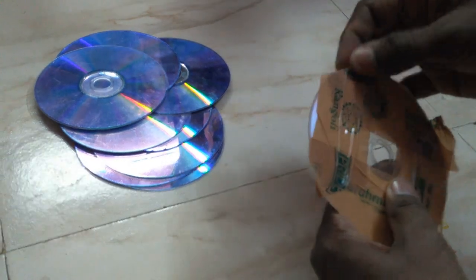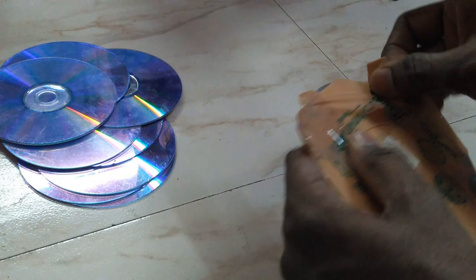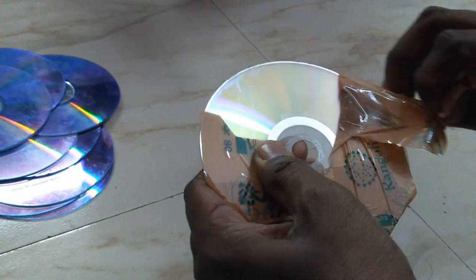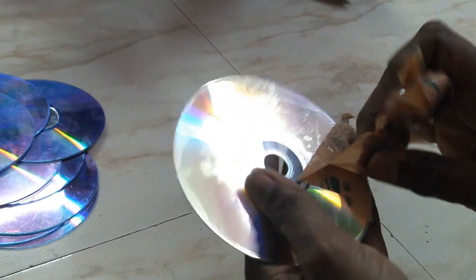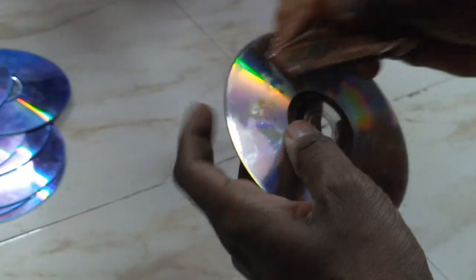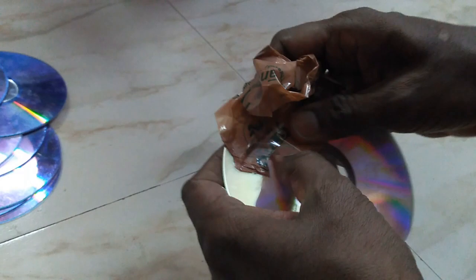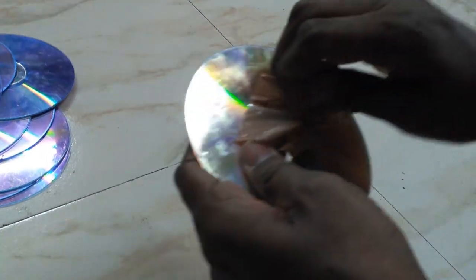Take an empty compact disc. First we need to remove the label surface from the CD. For this, fix a packing tape on the label surface and peel off the tape so that the label surface will come along with the tape. Now the CD will look like a transparent material. This CD will now act as a transmission grating.